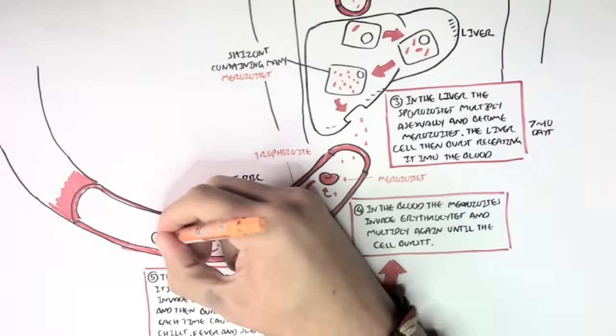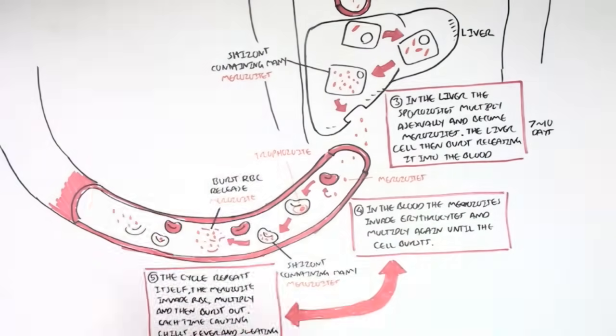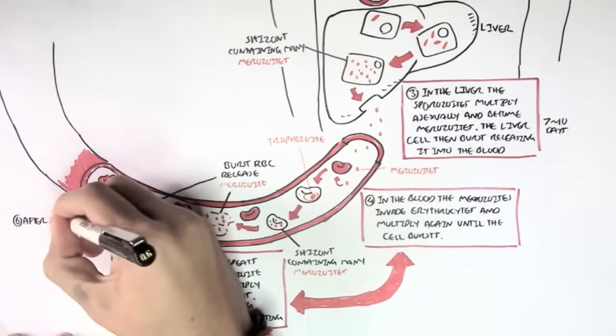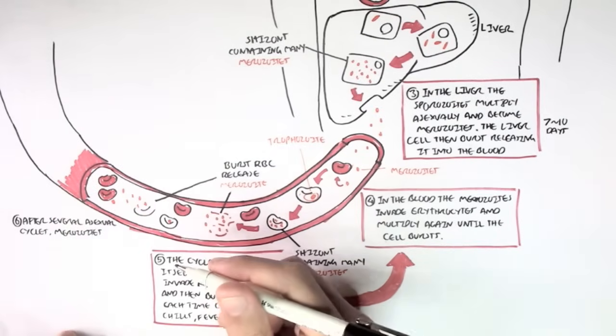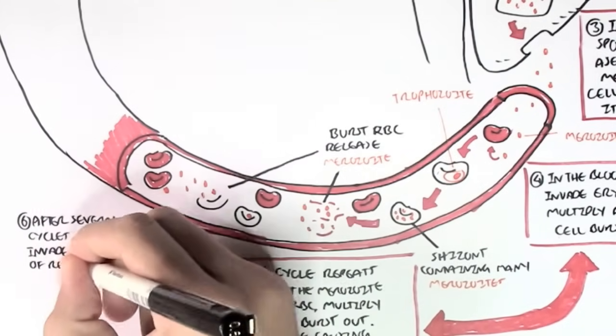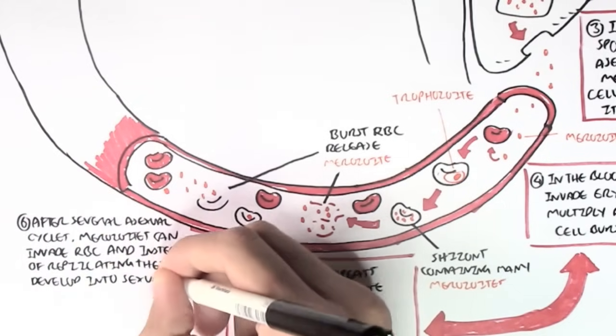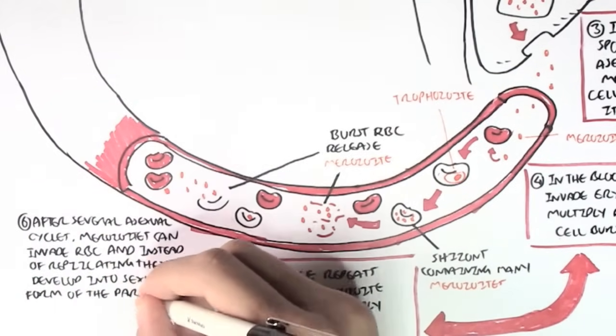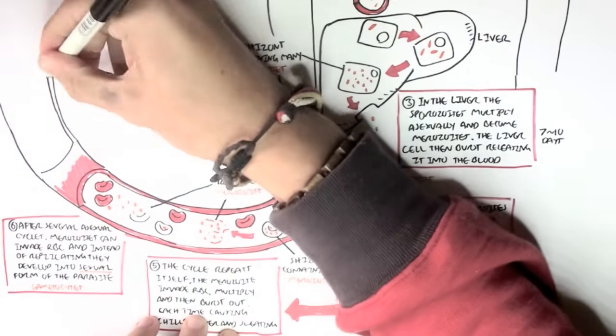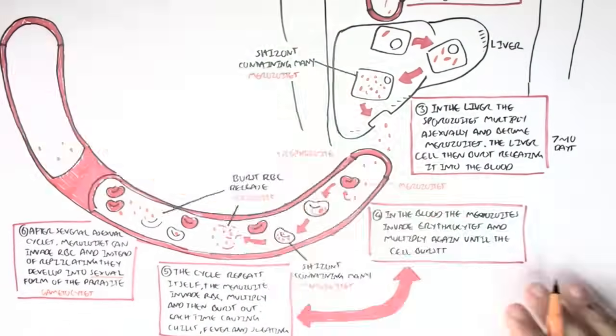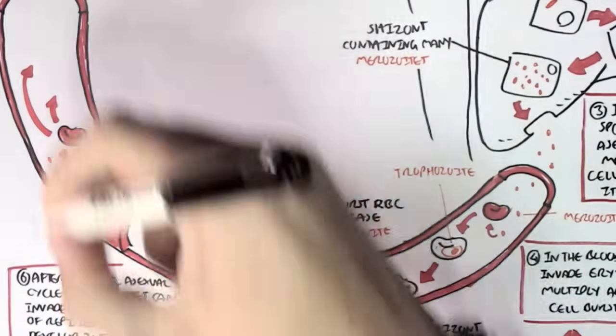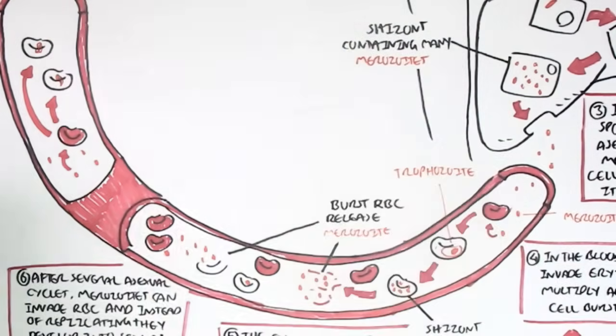So, these merozoites will keep invading red blood cells and multiply. Now, after several asexual cycles, the merozoites can infect a red blood cell, and instead of replicating or multiplying, they can develop into sexual forms of the plasmodium parasite, which are the plasmodium gametocytes. Now, there has to be two types, a female and a male gametocyte. So, here we have a merozoite invading a red blood cell and forms gametocytes, a female and a male gametocytes, both still in the red blood cell.